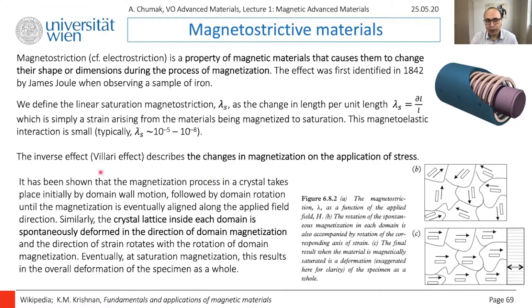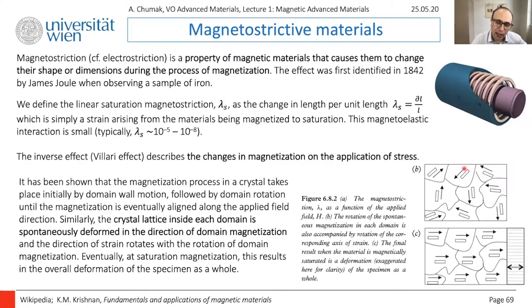This was a qualitative explanation of the Villari effect. Now, applying the same reasoning, we can explain the magnetostrictive effect. We know that in a domain state, the material has domains pointing in different directions with some size. The crystallographic anisotropy plays a role in how magnetization is oriented within each domain, and each domain will choose a direction that also minimizes the crystallographic energy.